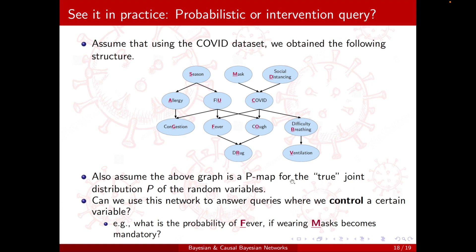Back to the question from the previous section: we had a directed acyclic graph for COVID, and assuming it's a PMAP, we asked whether a person will have fever if wearing masks becomes mandatory. From what we've learned here, this question is not P(F | M) but rather P(F | do(M = 1)).